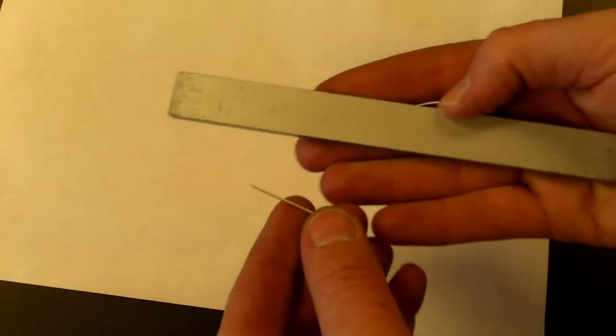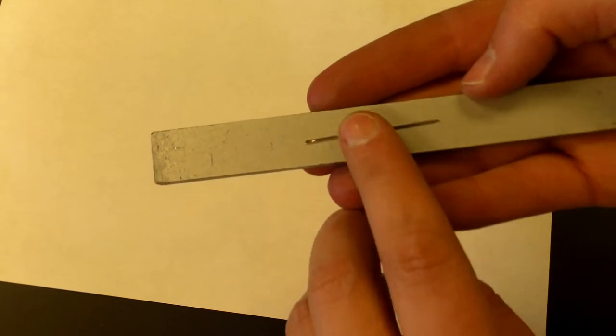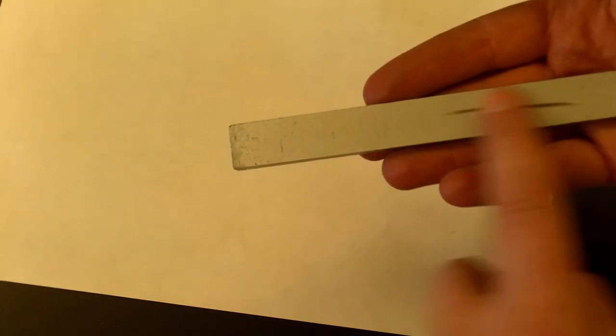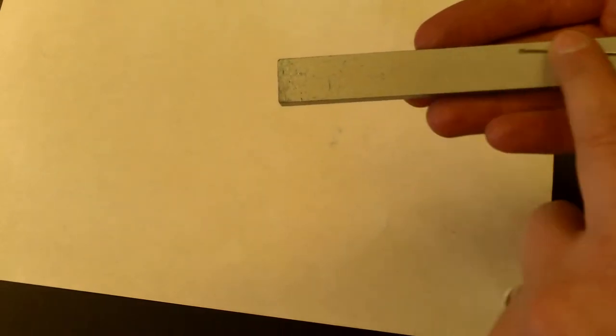What I'm going to do first is I'm going to take a needle and I'm going to put it like this. I'm going to rub it back and forth and that magnetizes the needle.